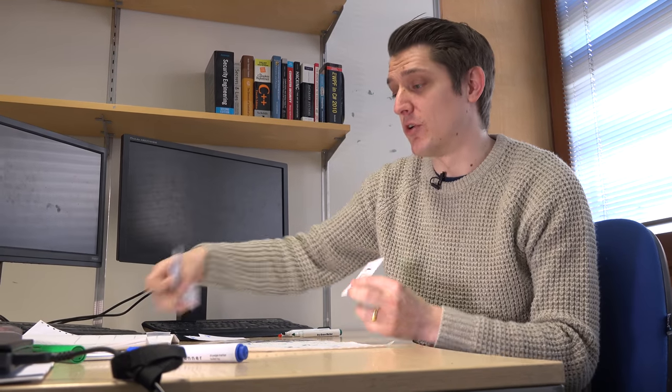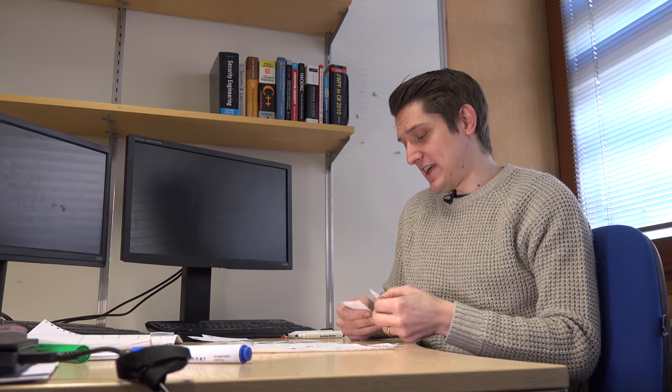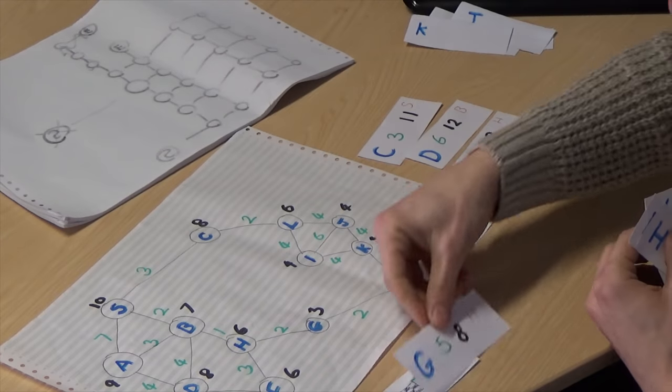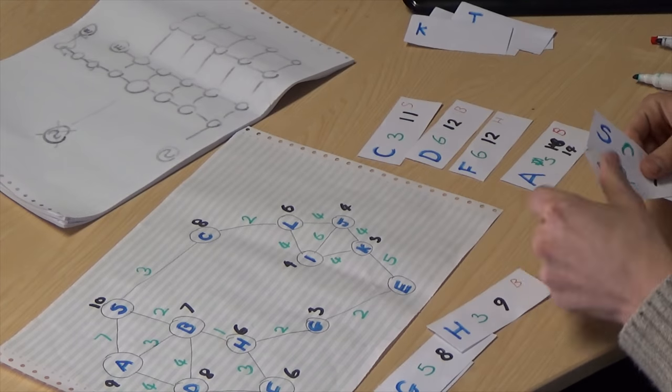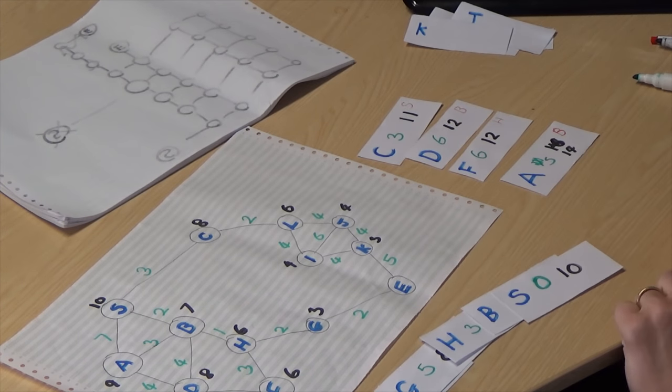We pop E off the top, we're about to expand it, and we realize that's where we're going, and we've finished our algorithm. And so then, just like before, we trace back through. E goes to G, G goes to H, H goes to B, B goes to S, and S is the start. So we've got our path S, B, H, G, E.